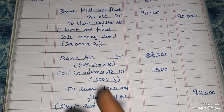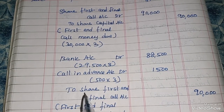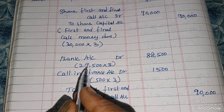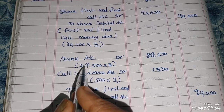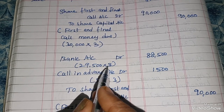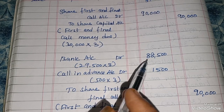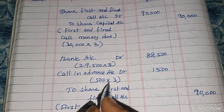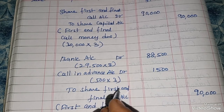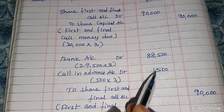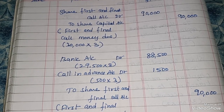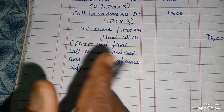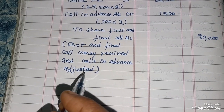First and final call money received entry. Bank Account Dr., Calls in Advance Account Dr., to Share First and Final Call Account. Bank receives: (30,000 - 500) × 3 = 88,500. Calls in Advance adjusted: 500 × 3 = 1,500. Total to Share First and Final Call Account: 88,500 + 1,500 = 90,000. The first and final call money received and calls in advance is adjusted.